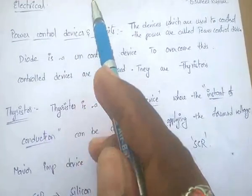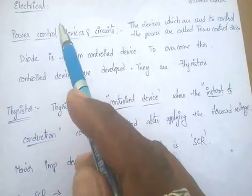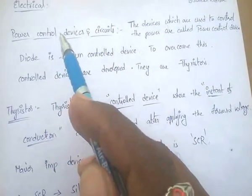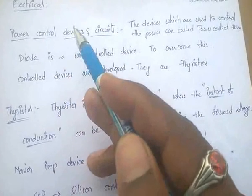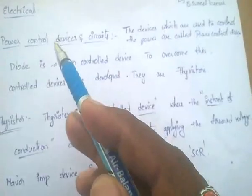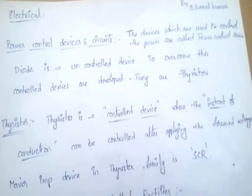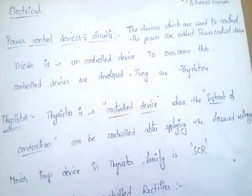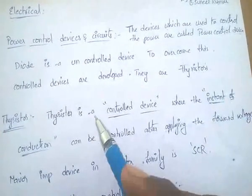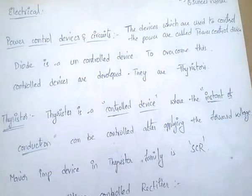thyristor family devices, and also power diodes, power MOSFETs, and power IGBTs. But thyristors are the most important power control devices.